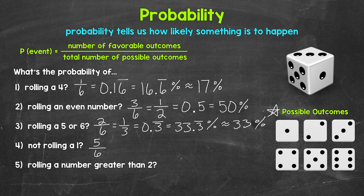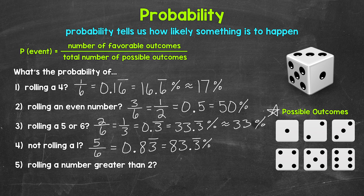Let's convert this to a decimal. We get 0.8 and then a repeating three — so another repeating decimal. Then converting to a percent, we get 83.3 repeating percent. Let's round this to the nearest percent as well: three in the ones place with a three in the tenths, so this is approximately 83 percent. That's the probability of not rolling a one.